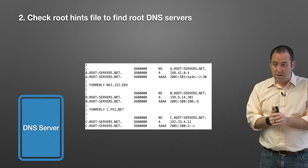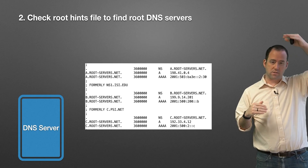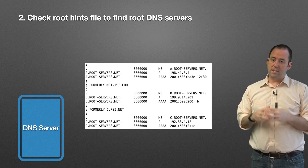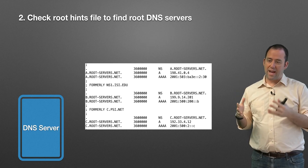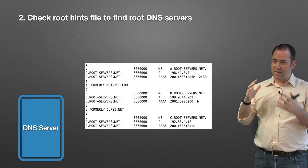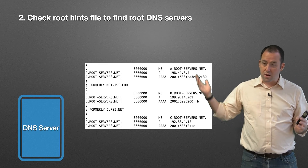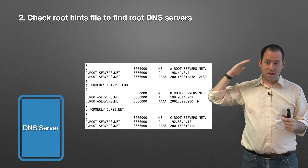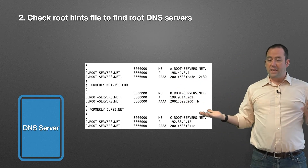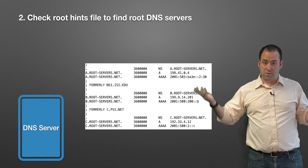It reaches out and figures out where those root name servers are. DNS is a hierarchy — it starts at the root. So we start at the root, and the server knows where that root is because it has a root hints file. This is a text file stored on the DNS server. You can go out on the internet and download this file yourself. This file tells us where the root servers are that we need to talk to.